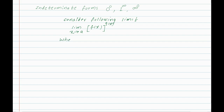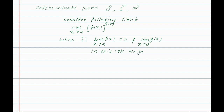There are three cases. First case: if the limit of f(x) as x tends to a is 0, and the limit of g(x) as x tends to a is also 0, then we get the indeterminate form 0 to the power 0.